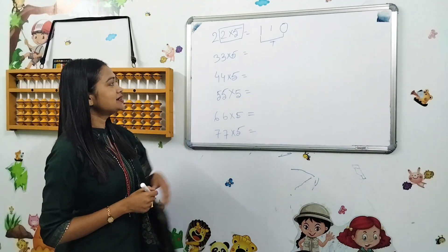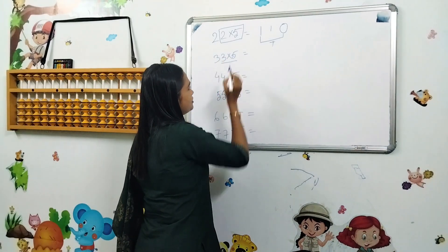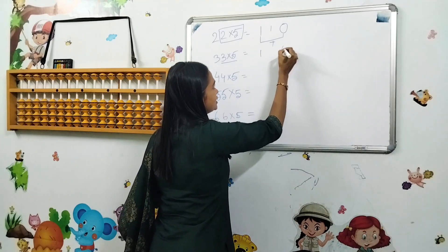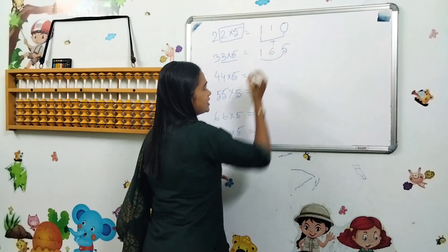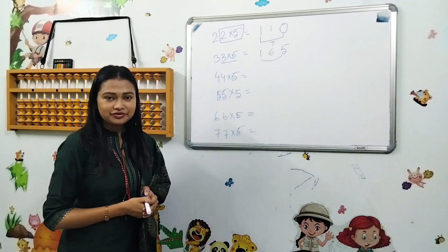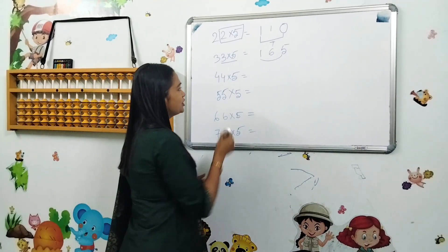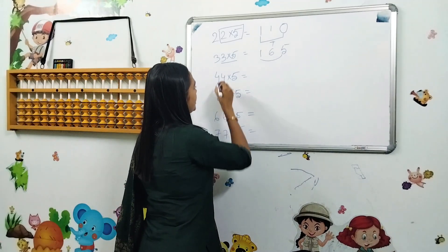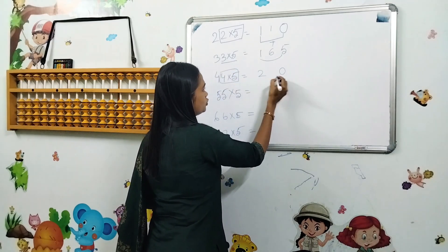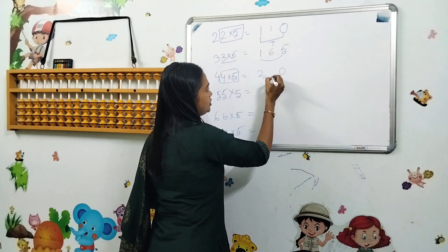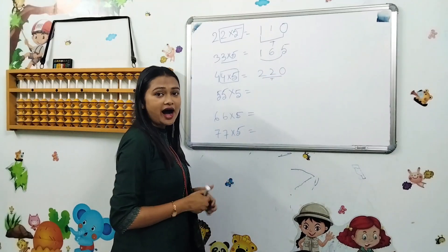So next, we will see 35 into 5, which is 15. The answer is 165. The next one is 44 into 5. So this will be 20. And the answer is 2 plus 0, that will be 2. So 220 will be the answer.